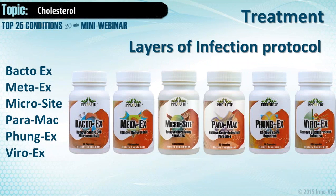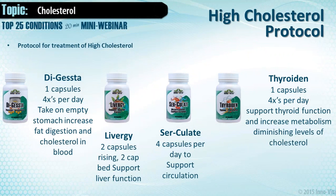Always look for a layer of infection — has there been some parasitic issue affecting the arteries, causing irritation and roughness, leading to plaque deposit? Plaque is like a band-aid. Bacto-X for bacteria, Meta-X for metals, Microsite and Paramac for parasites, Fung-X and Viro-X — these are the layers of infection I always look for with kinesiology: is there a layer of infection affecting that particular organ?